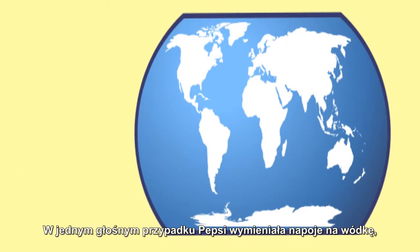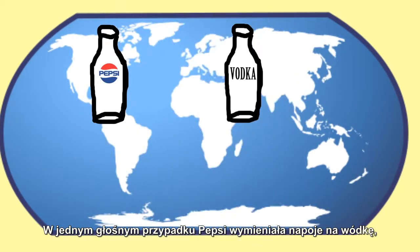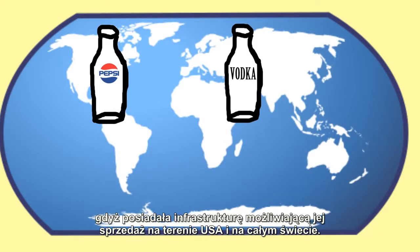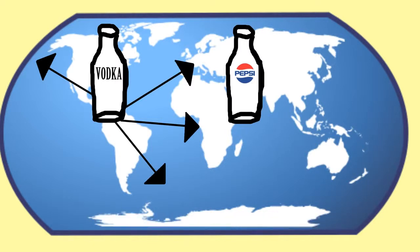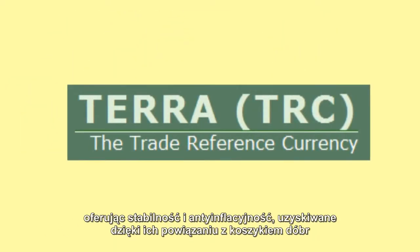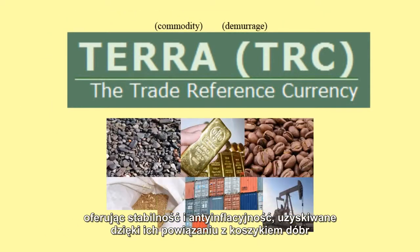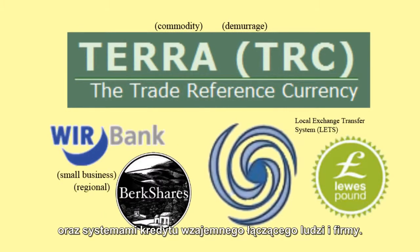In one famous example, Pepsi traded soft drinks for vodka, which it had the infrastructure to sell back in the United States and around the world. People have proposed creating a variety of currencies that would facilitate international trade, from anti-inflationary stable currencies linked to a basket of commodities to mutual credit systems between people and businesses.